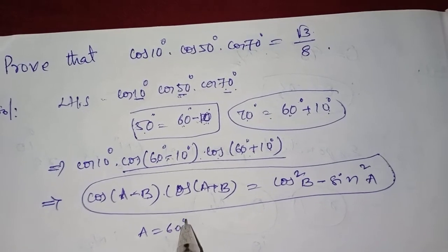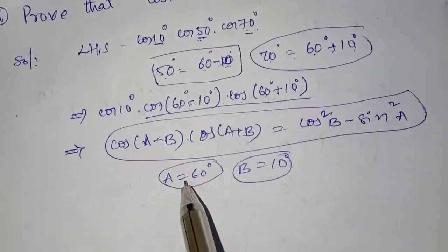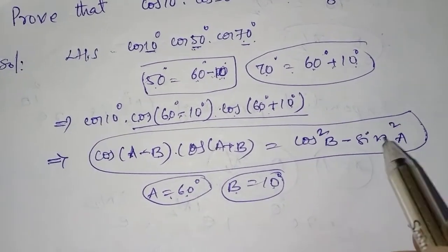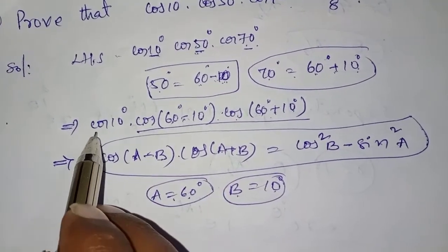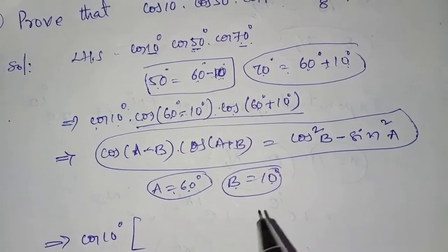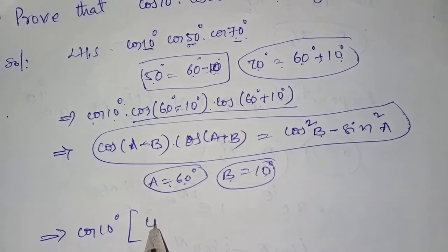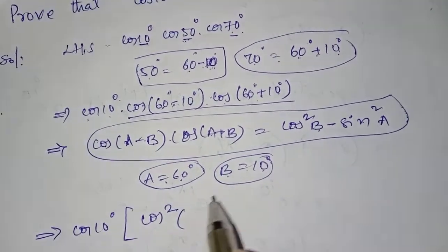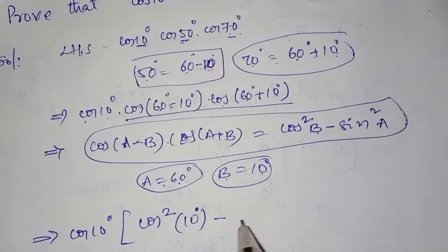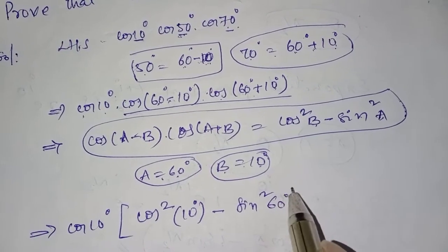Comparing with the formula, A is equal to 60 degrees and B is equal to 10 degrees. Before that, this is multiplied by cos 10 degrees. So we have cos 10 degrees into the result of substituting into the formula: cos squared B, where B is 10 degrees, minus sin squared A, where A is 60 degrees.